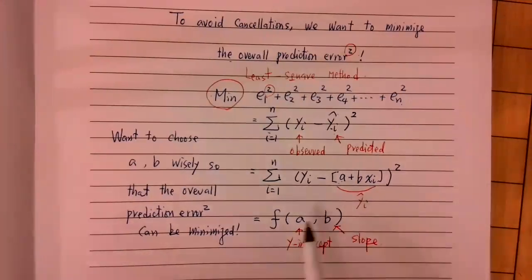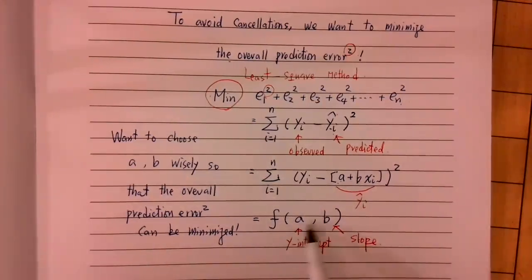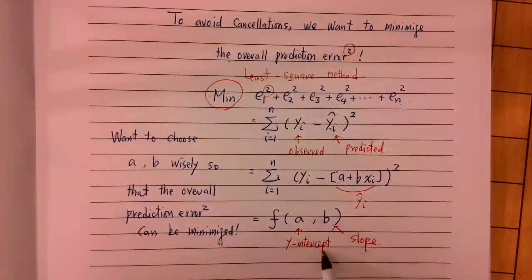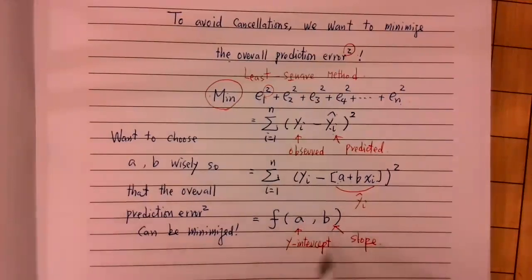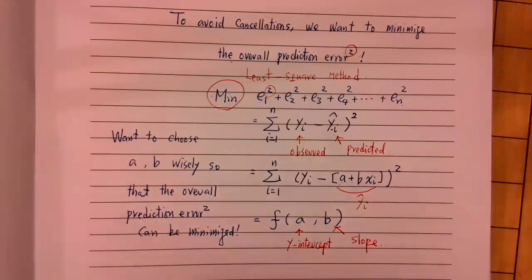Now let's look at finding A and B — a good y-intercept and a good regression slope — wisely. How can we choose wisely? Well, this concept actually comes from calculus.